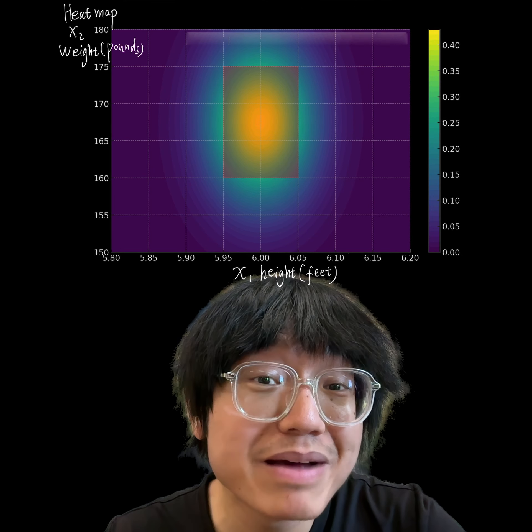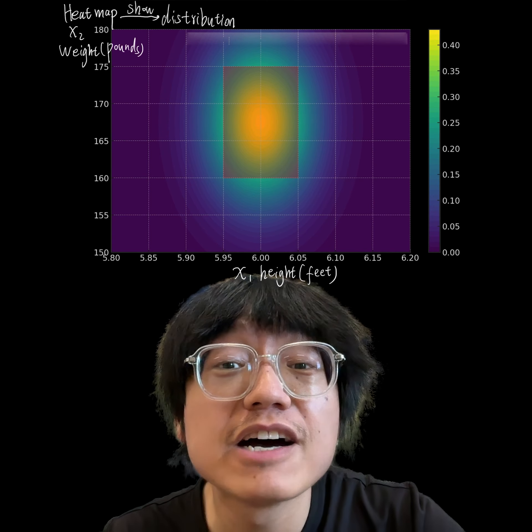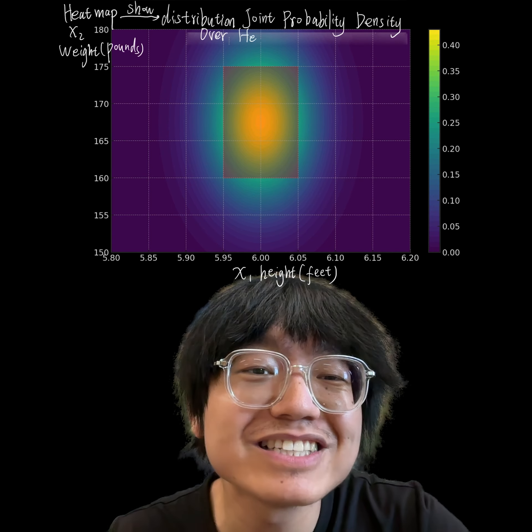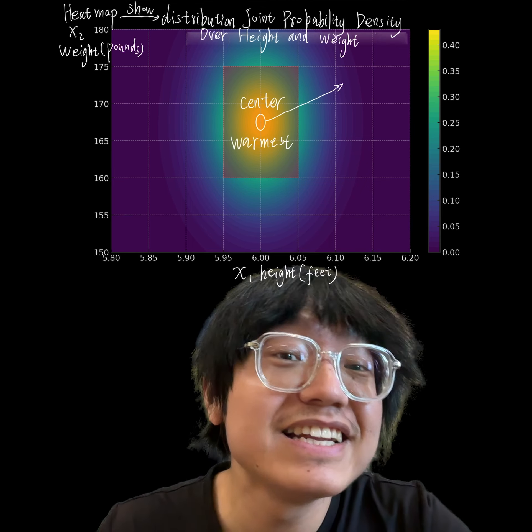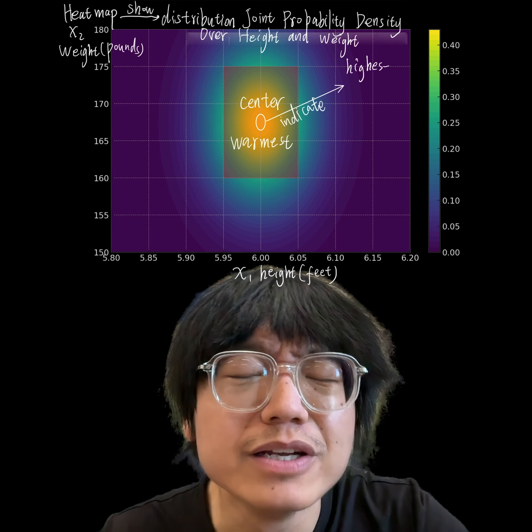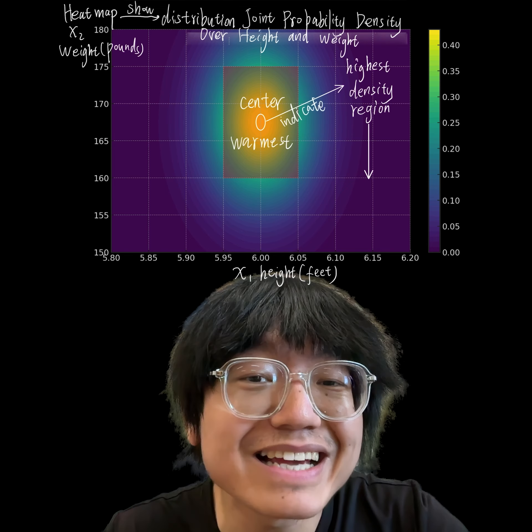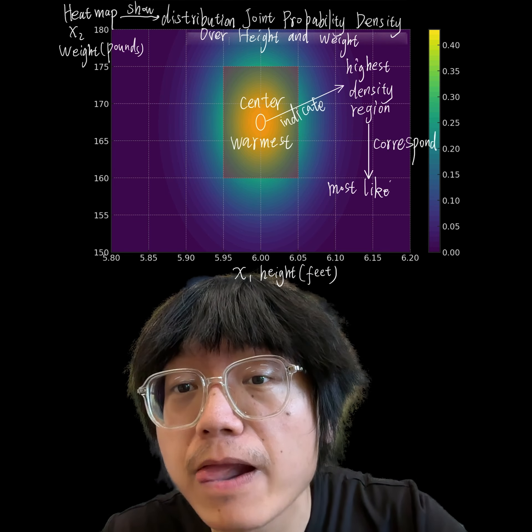This heat map shows the distribution of the probability density over height and weight. The center, where colors are warmest, indicates the highest density region, which corresponds to the most likely combination of height and weight.